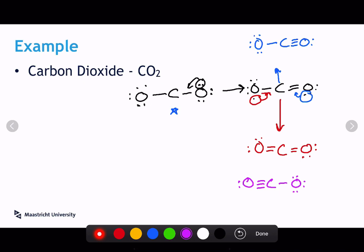So, what we have now is three different resonant structures. Triple bond on the left, two double bonds, triple bond on the right.